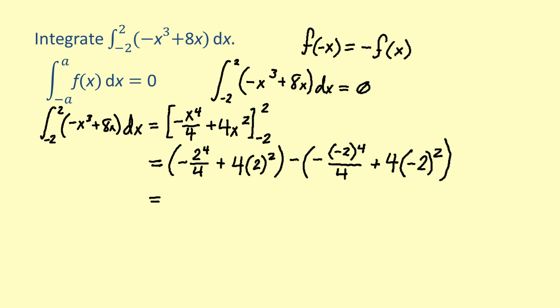Simplifying, we get the quantity of negative 4 plus 16 minus the quantity of negative 4 plus 16, which is equal to zero. Since we got zero for our answer, this verifies the odd function rule for this integral.